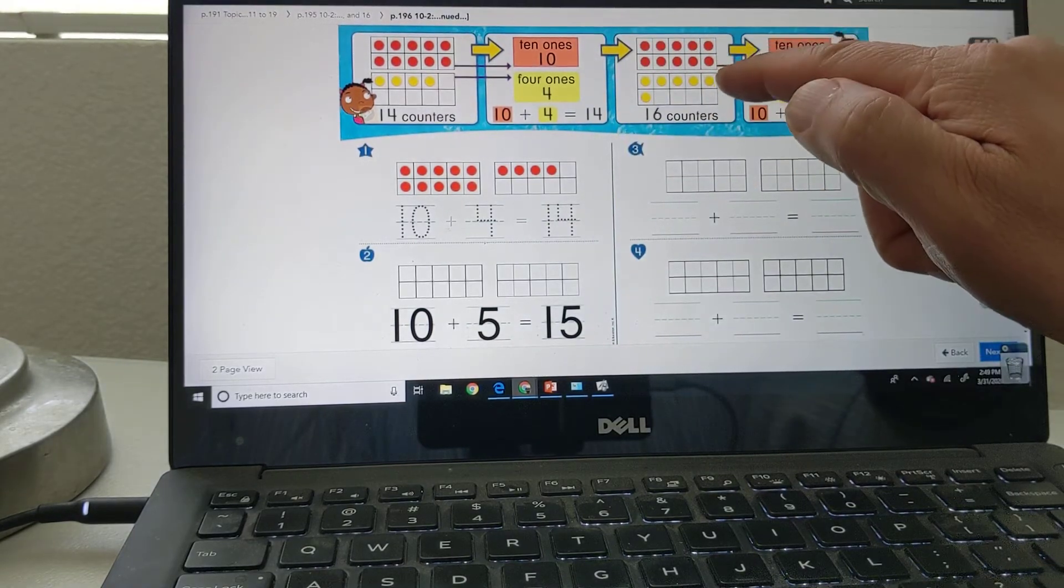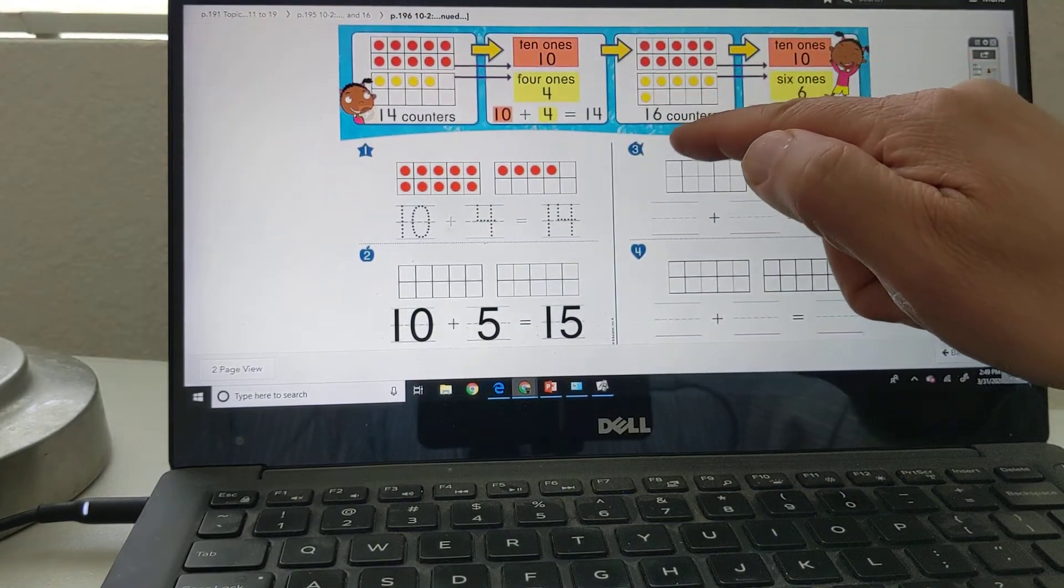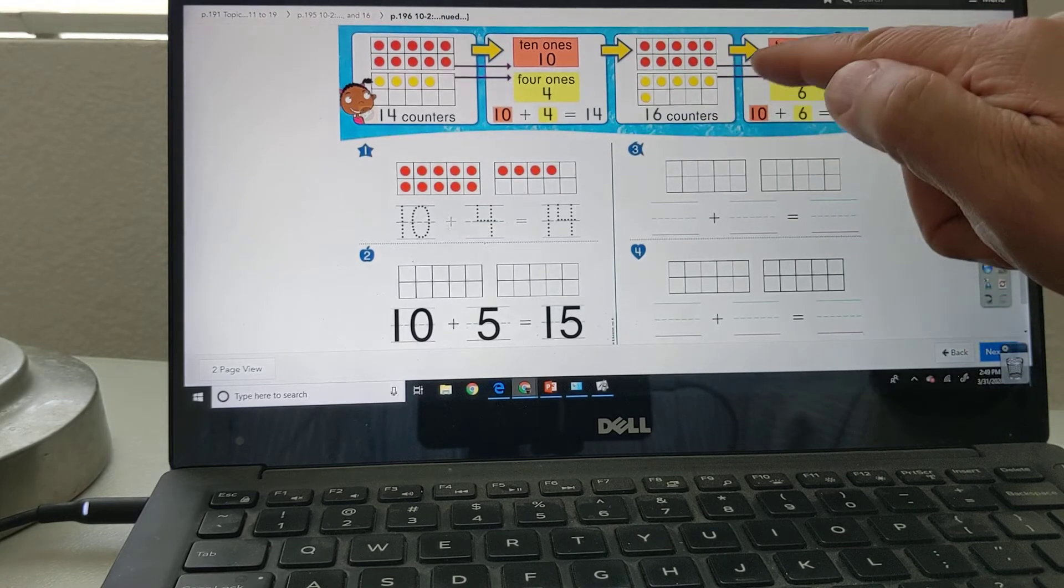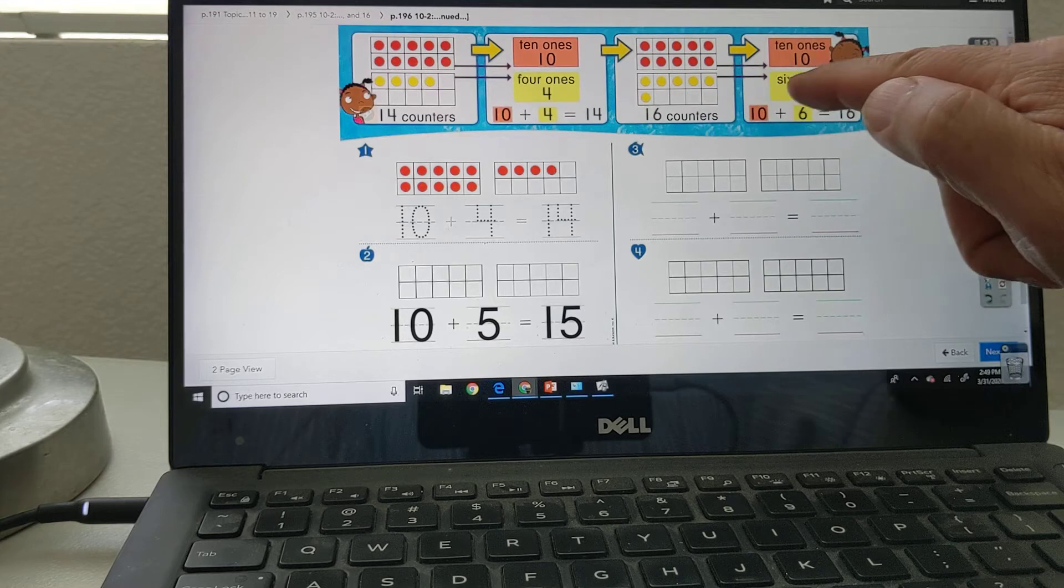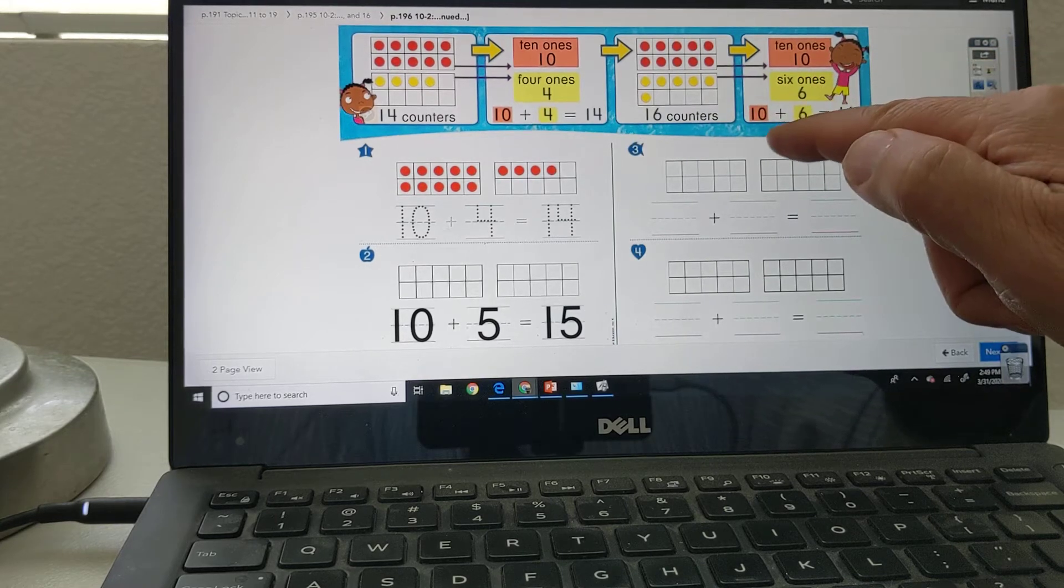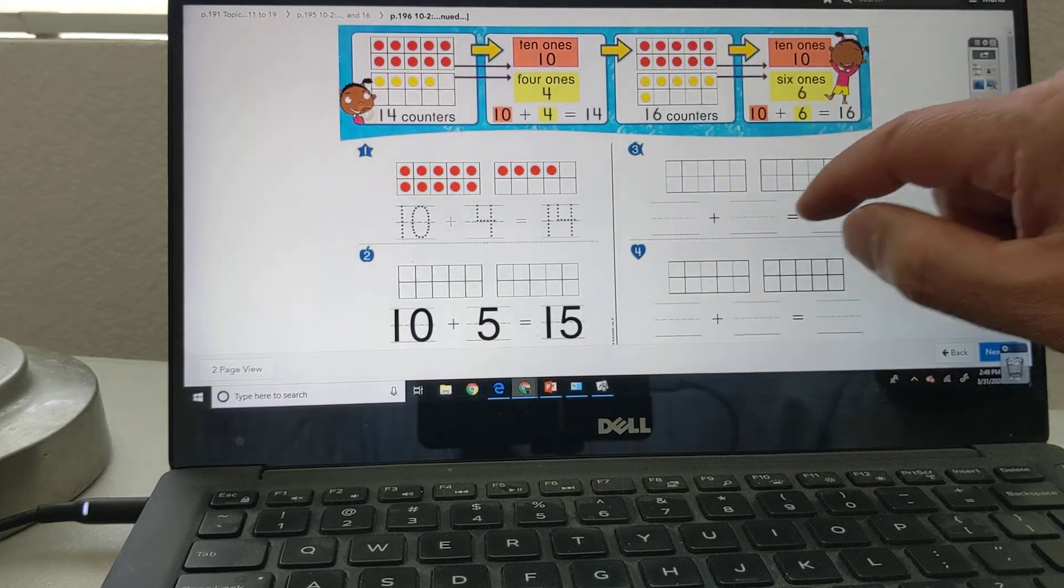Now you have 10 reds, 6 yellow. 16 counters. 10 ones, 10 reds is 10. 6 yellows, 6 ones, 6. 10 plus 6 equals 16.